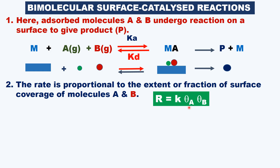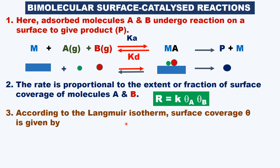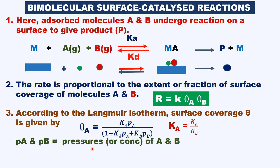Higher the surface coverage, more the rate of the reaction. θA is the fraction of surface covered by molecule A, and θB is the fraction of surface covered by molecule B. From the Langmuir adsorption isotherm, the surface coverage is given by: θA = KA·PA / (1 + KA·PA + KB·PB), where PA and PB are partial pressures of A and B in the gaseous state, or concentrations of A and B in the liquid state.